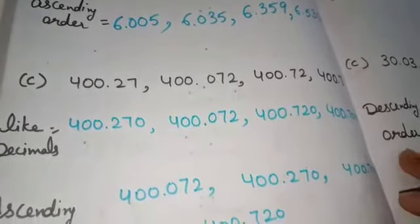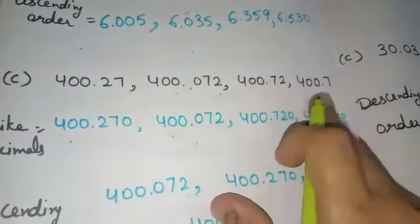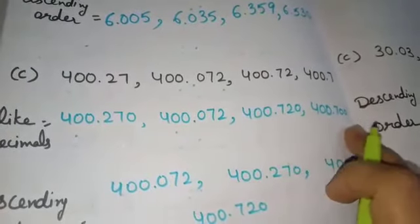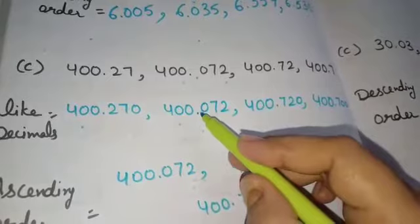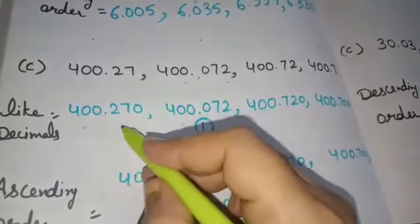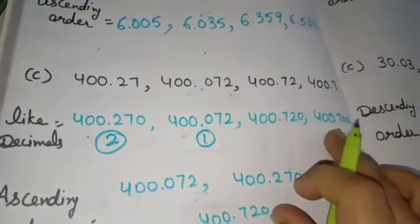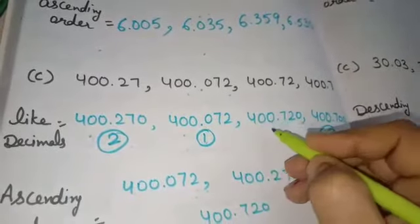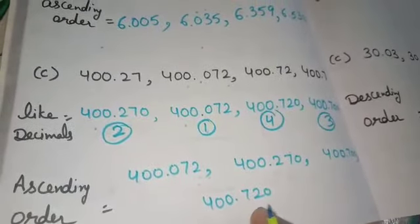Let's discuss one more part — Part C of the question. Here also, the digits after the decimals are 2, 3, 2, and 1, so we add zeros to make them like decimals: 270, 072, 720, 700. Now, the whole number part 400 is same for all. Starting from the smallest: 072 is the smallest and comes first, then 270, then 700 at third place, and 720 at fourth place. So this is the ascending order of these decimals.